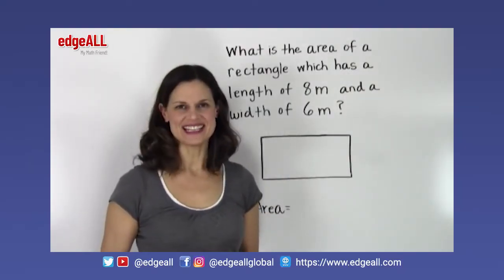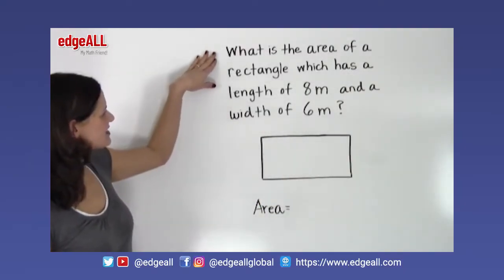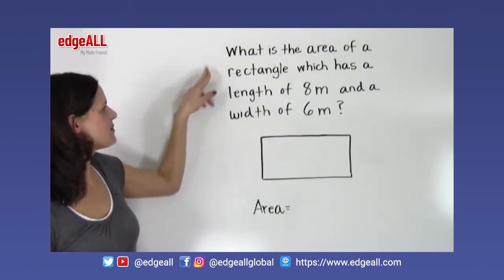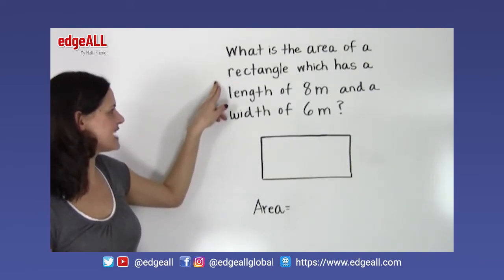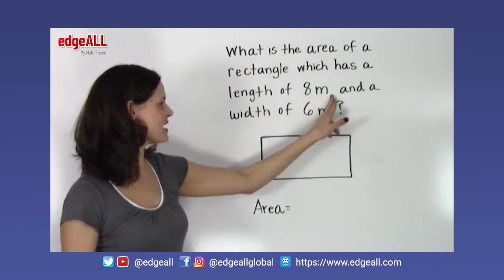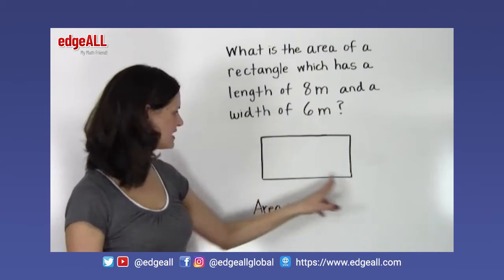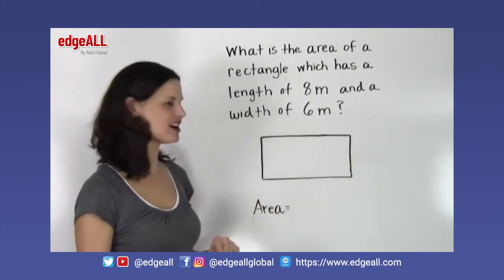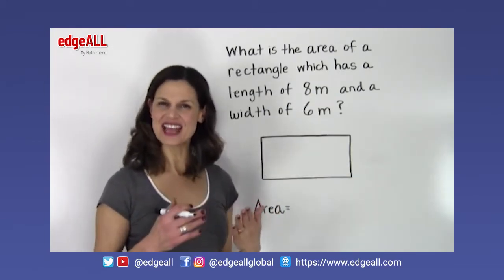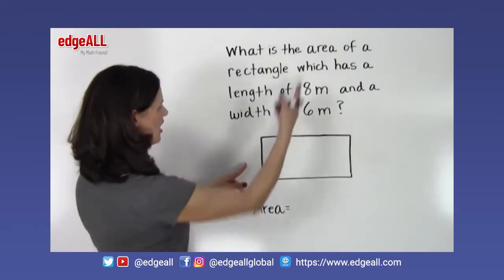Let's take a look at an example. Our problem asks us: what is the area of a rectangle which has a length of 8 meters and a width of 6 meters? I have a diagram here of a rectangle, and we'll label that to help us see what we calculate for our area.